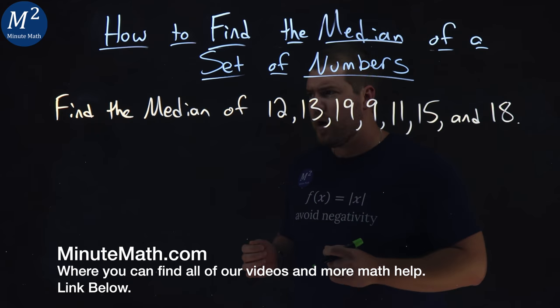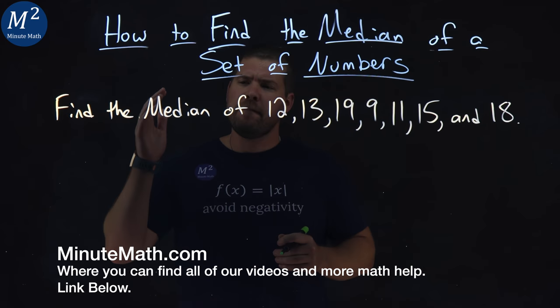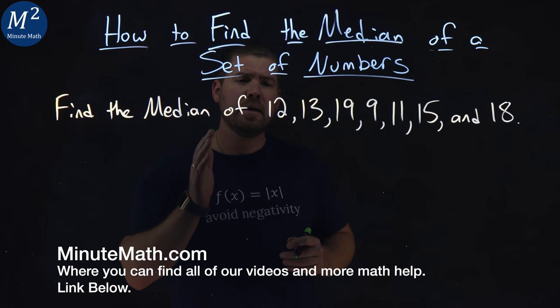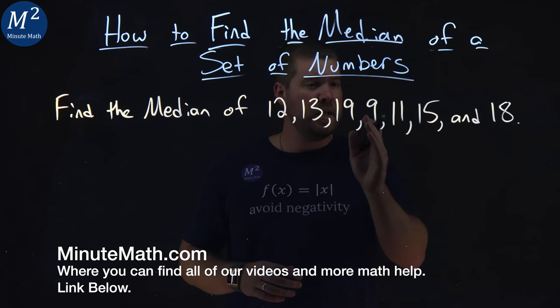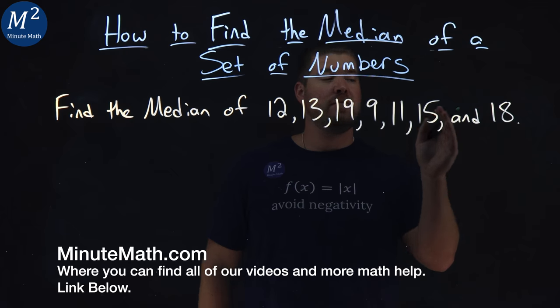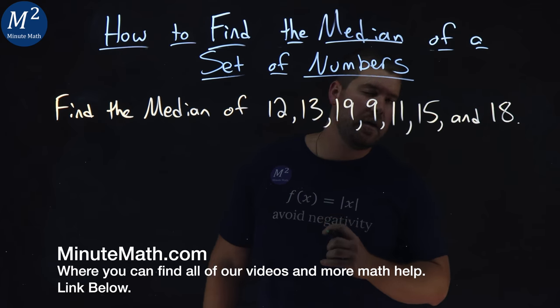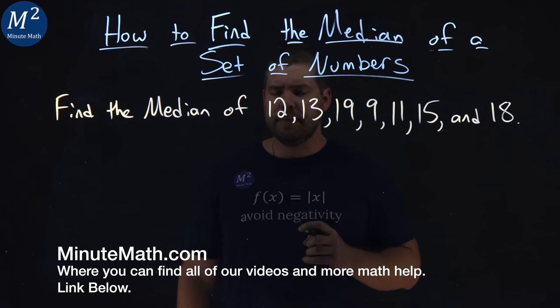We're given this problem right here. Find the median of 12, 13, 19, 9, 11, 15, and 18.